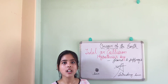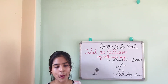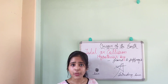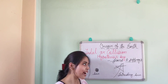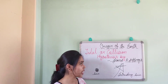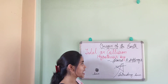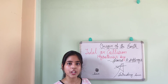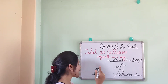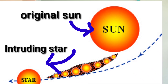This tidal hypothesis or collision hypothesis is also based on two different heavenly bodies from which the earth originated. It was propounded by two famous British geologists and scientists — Jeans and Jeffreys. Jeans first proposed this theory, and Jeffreys later clarified and corrected some of its unrealistic aspects. The theory involves two heavenly bodies: our original sun, and an intruding sun.